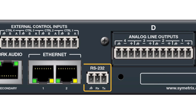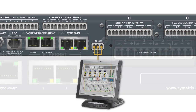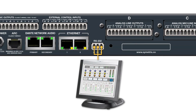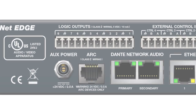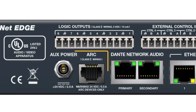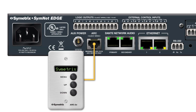A 3-pin terminal block, requiring only transmit, receive, and ground, provides an RS-232 connection for third-party control. A single RJ45 connection provides power and data to the Symmetrix arc network.